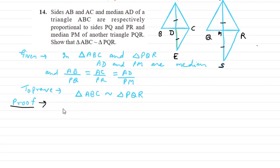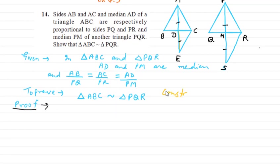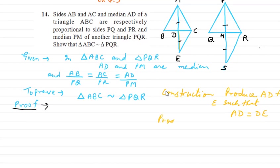Now we write the formal proof. Construction: Produce AD to E such that AD equals DE. Also produce PM to S such that PM equals MS. Then join EC and RS. This is the construction.